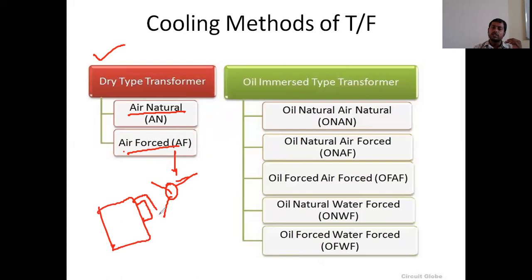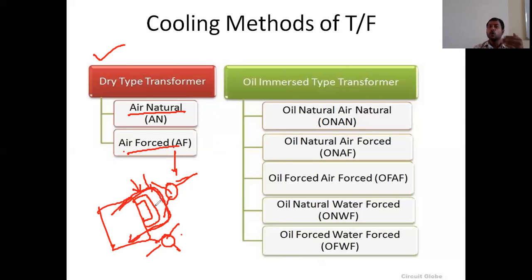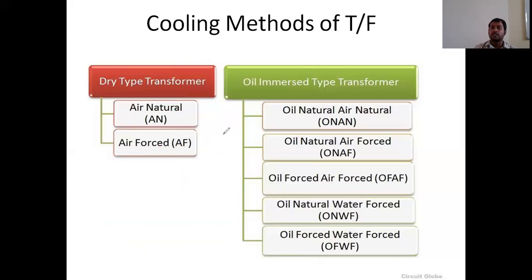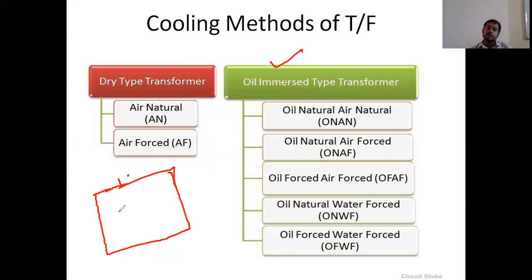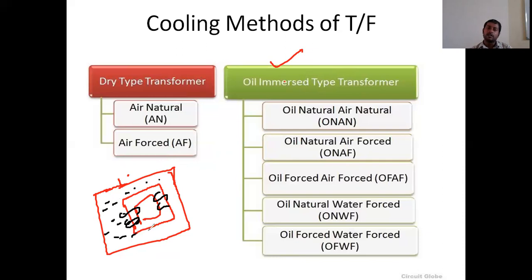This is the transformer and these are the radiators — the outside pipes are nothing but radiators. We use forceful fans to circulate air in the radiators. The oil flowing in the radiators will be cooled by using forced air. That is why this system is called air forced cooling system. The transformer tank contains the core and winding, and when the core and winding are placed in oil, such a system is called oil immersive type transformer.